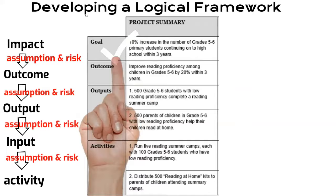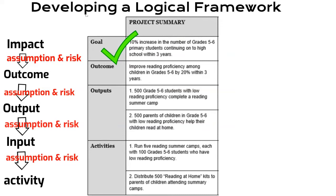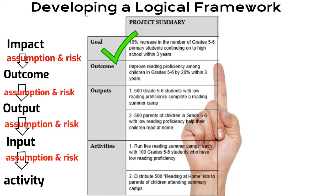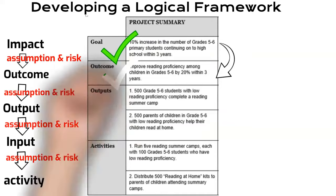In this example, we can see that the goal or the impact of the project is to increase the number of primary students continuing to high school by 10% within three years. But to achieve this goal or impact, we need to improve the reading proficiency among children in grades 5 to 6 by 20% within three years — so this becomes the outcome.